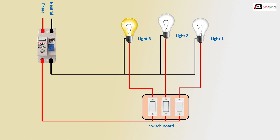Third switch off — light off. Second switch off — light off. First switch off — light off. This is the three-light control switch button. Thank you.